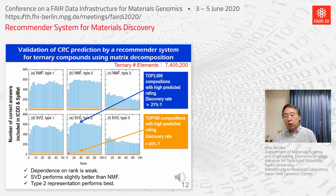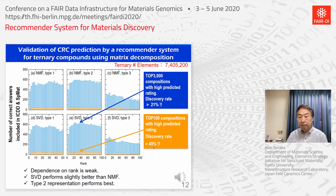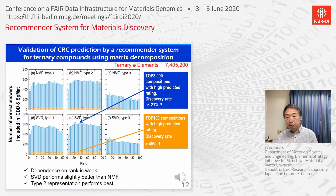For the top 100 compositions, the number of successful results — compounds included in the test set — was something like 45%. It means the discovery rate is more than 45% by this method. Even for the top 3,000 compositions, the discovery rate was more than 21%. Please keep in mind this 45% number.